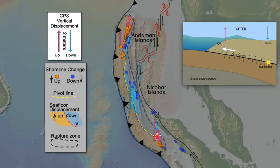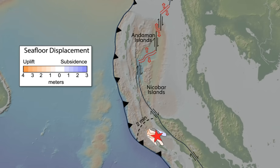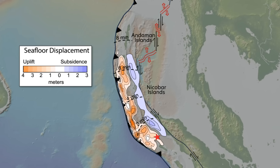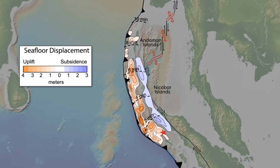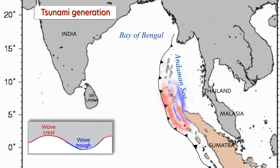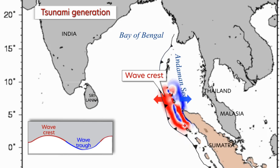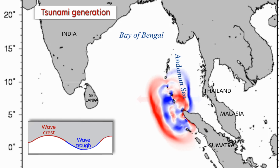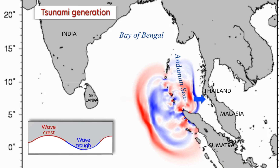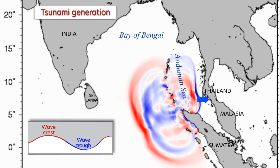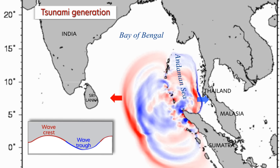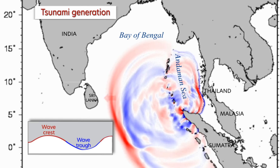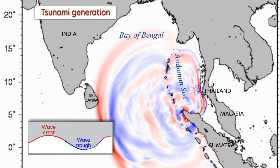As the earthquake progressed northward from the epicentral region past the Nicobar Islands, vertical motions of the seafloor displaced a massive amount of overlying seawater, producing a 900-kilometer-long crest of the sea surface on the west and trough on the east that spread into the 2004 Indian Ocean tsunami. Notice how the trough of the tsunami moving east across the shallow Andaman Sea travels more slowly than the crest heading west across the deeper Bay of Bengal toward India and Sri Lanka.